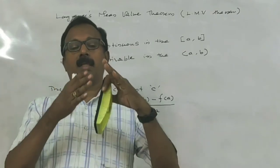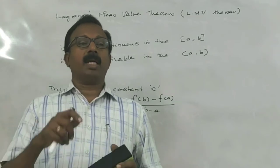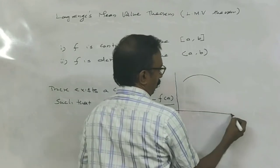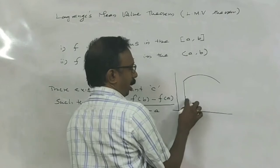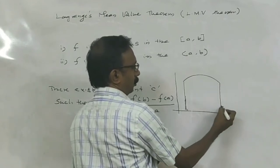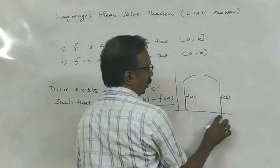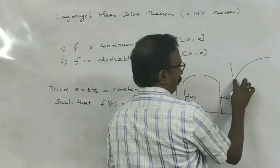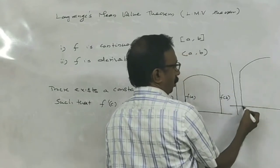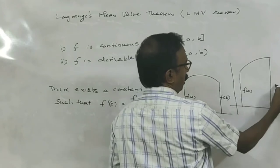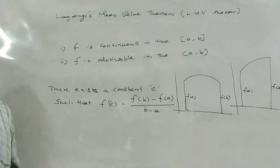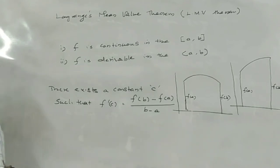Suppose the curve is symmetrical — A and B are at the same height, so F of A equals F of B. If the curve is not symmetrical, the ordinates are not equal, meaning F of A is not equal to F of B. If the curve is symmetrical, then Rolle's theorem applies. If the curve is not symmetrical, then Rolle's theorem fails and Lagrange's mean value theorem can be applied.